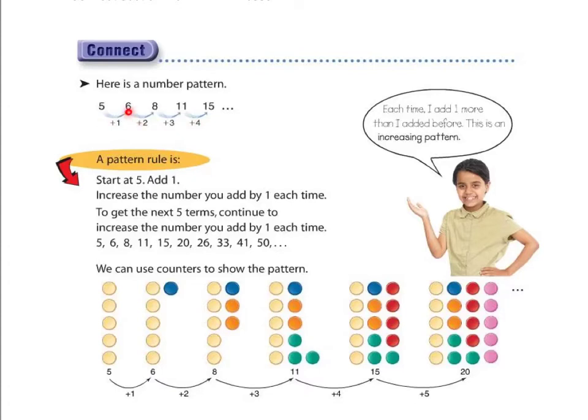Well, to get from 5 to 6, from 6 to 8, from 8 to 11, from 11 to 15, we know it's an increasing pattern. If it's increasing, we're going to be adding or we're going to be multiplying. Well, can we multiply anything from 5 to get to 6? No, we can't, so it's probably adding. From 5 to 6, we can see it's going up by 1.